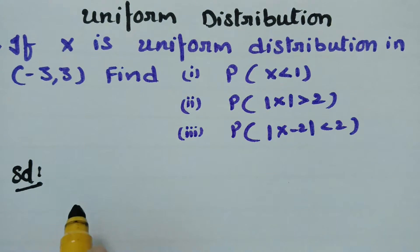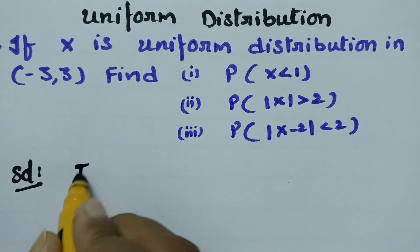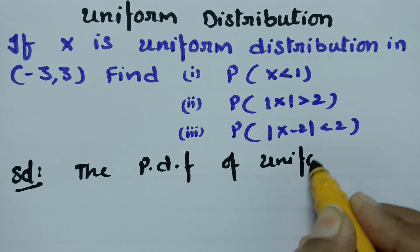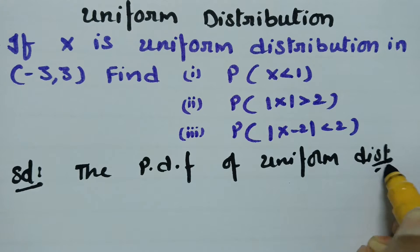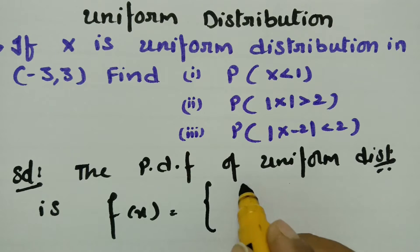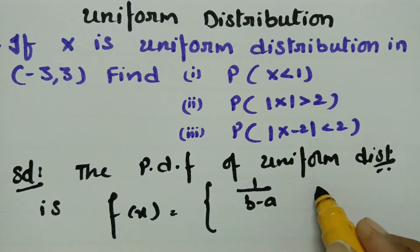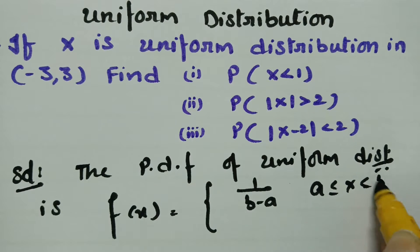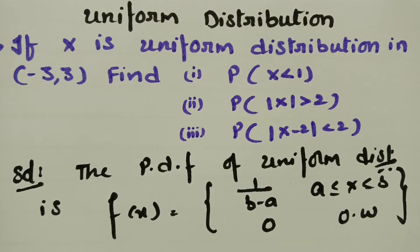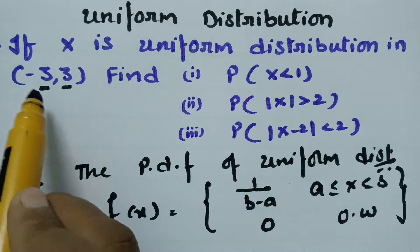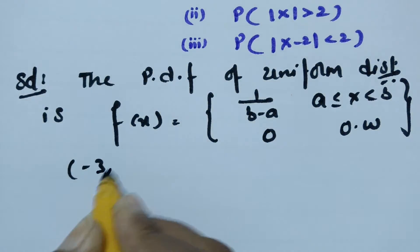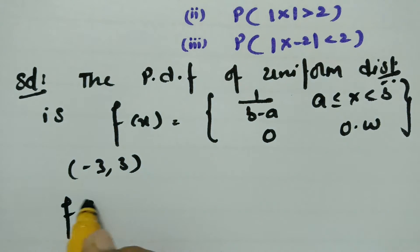X is given as a uniform distribution. The probability density function of the uniform distribution is f(x) = 1/(b - a), where x lies between a and b, and 0 otherwise. Here, a is minus 3 and b is plus 3, so we need to find the PDF on the interval (-3, 3).